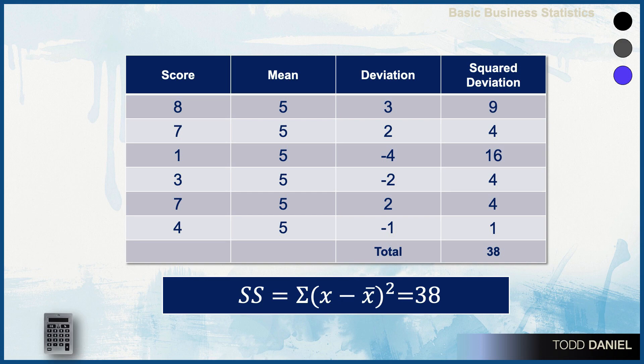However, by squaring those deviations, the numbers become positive. 3 squared is 9, 2 squared is 4, negative 4 squared is 16. To get the sum of squares, all we need to do is add up the squared deviations. The total of the numbers in that column is 38.